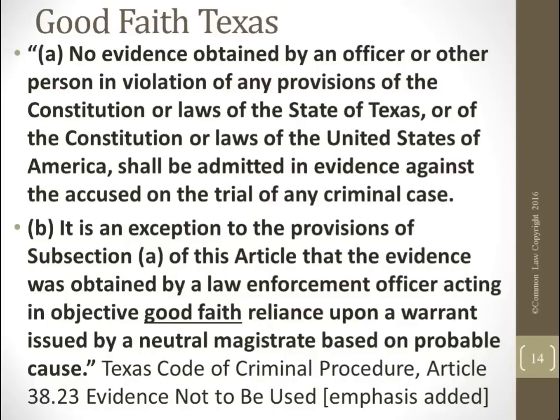That sounds good in paragraph A, but paragraph B throws it all out the window. It is an exception that evidence was obtained by a law enforcement officer acting in objective good faith reliance upon a warrant issued by a neutral magistrate based on probable cause. First of all, there's no such thing as a neutral magistrate — they're all bought and paid for. And there are no warrants; it's a capius, which is not a warrant.